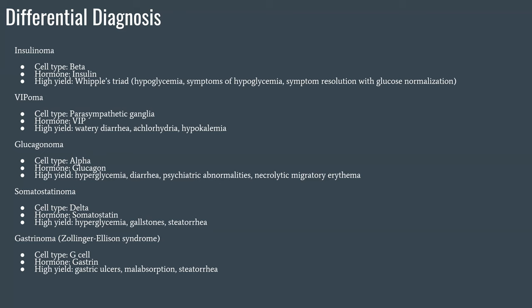VIPomas have a somewhat unusual cell type — parasympathetic ganglia — but you're not likely to be asked that. The hormone is VIP, vasoactive intestinal peptide, which is very high yield. The classic triad is watery diarrhea, achlorhydria, and hypokalemia.